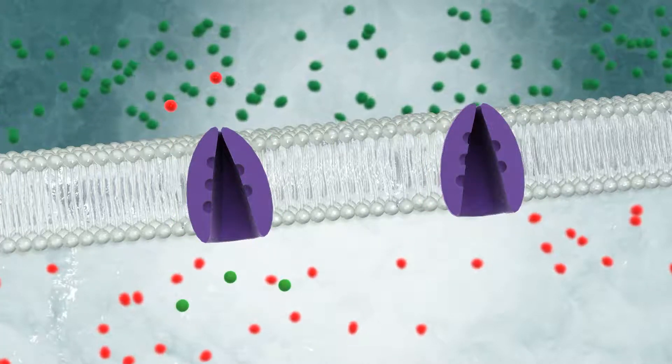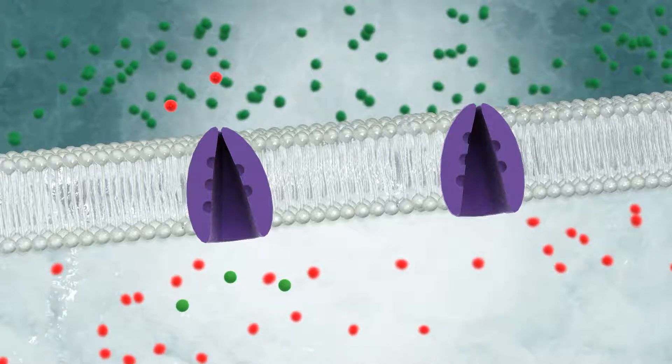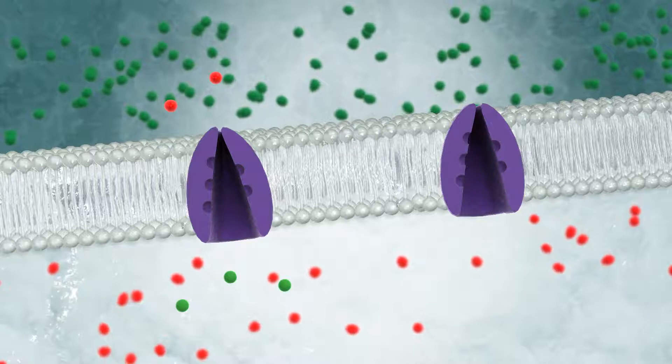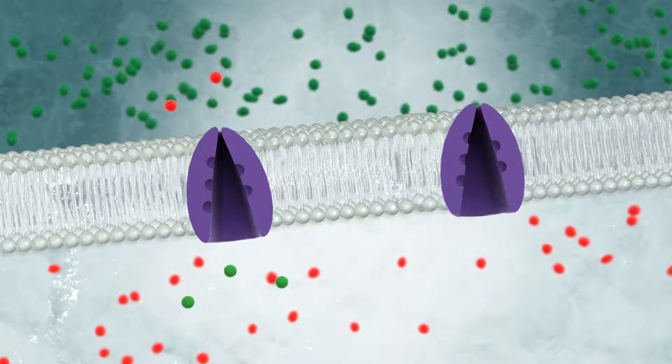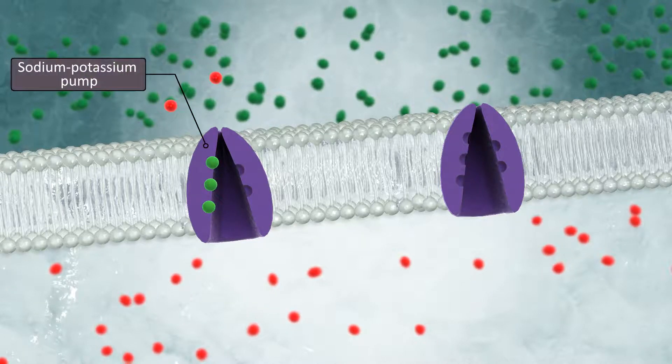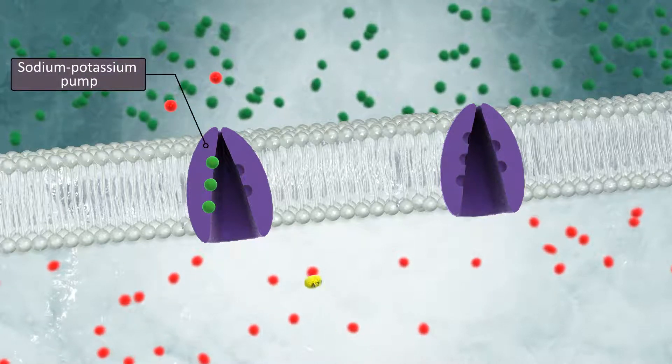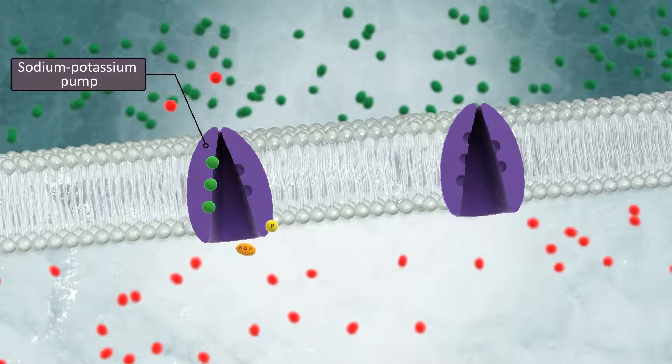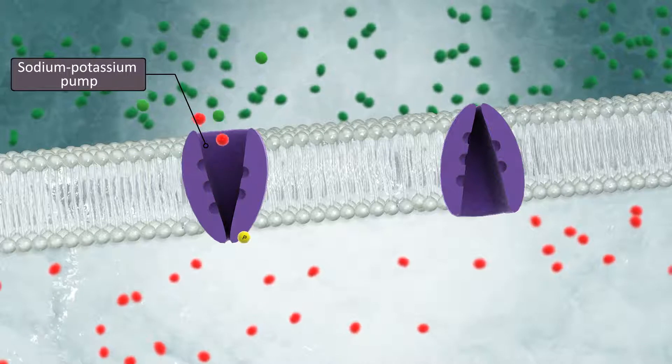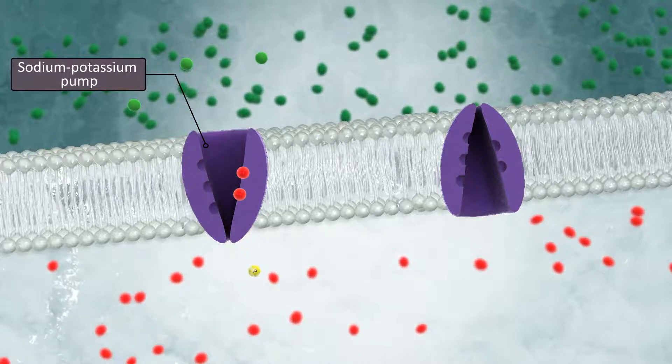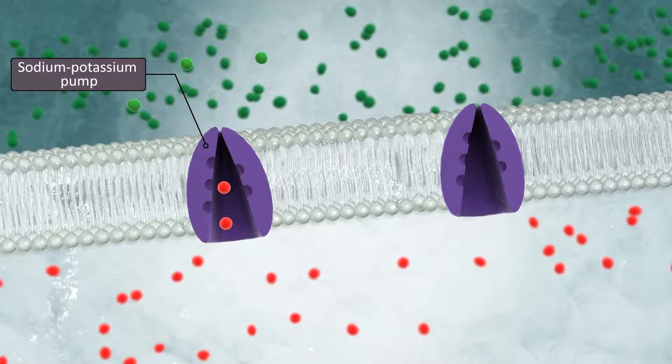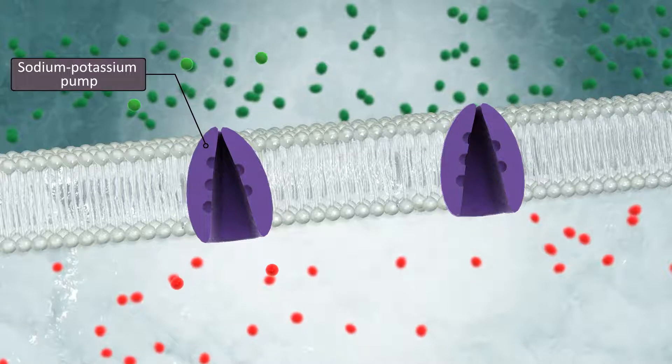An ion pump is a type of membrane transport protein. It requires energy to push ions from an area of lower concentration into an area of higher concentration. The ion pump most important in the maintenance of membrane potential is the sodium-potassium pump. Using ATP as its energy source, it is able to pump three sodium ions out of the cell and two potassium ions into the cell at the same time. Leak channels and ion pumps complement each other to maintain a constant electrical potential and level of ion concentration.